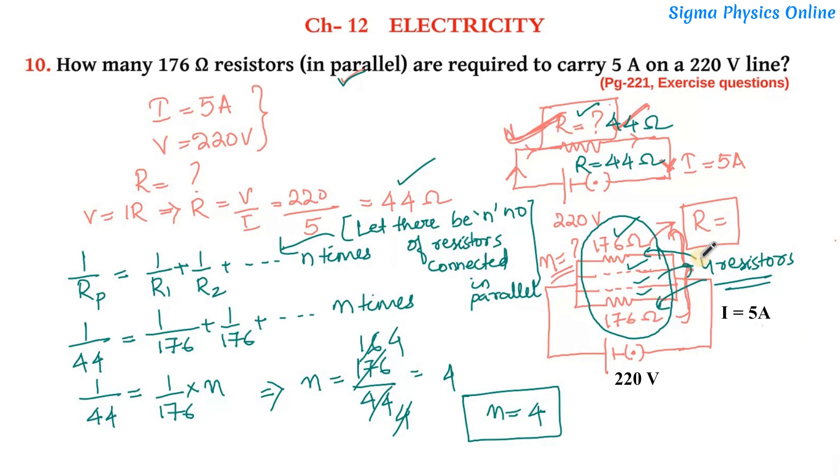So n equals 4. There are four resistors, each having a value of 176 ohms, and when they are connected in parallel, they produce an equivalent resistance of 44 ohms in the circuit. So the answer to this question is there are four resistors.